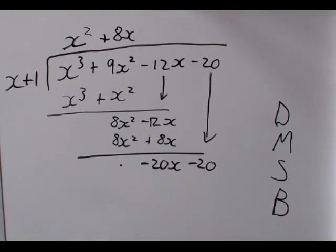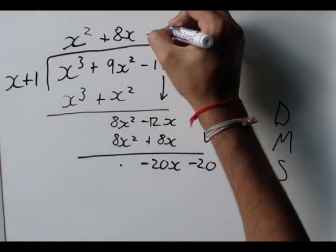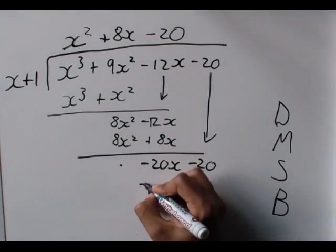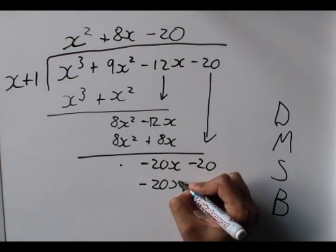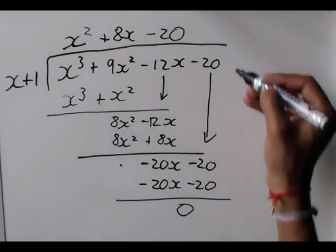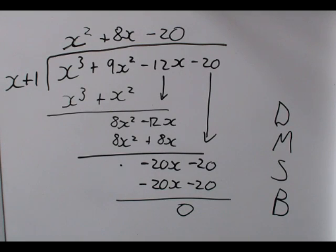And we start the process again. x into minus 20x gives me minus 20. Now, I multiply and end up with minus 20x minus 20. And this is 0. And there is nothing to bring down. And we are done.